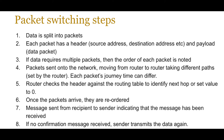The steps to send data from one device to another using packet switching are: first, data is split into packets, each with a header including source address, destination address, and a payload. If data requires multiple packets, the order of each packet is noted. Packets are sent onto the network moving from router to router taking different paths. The router checks the header against the routing table to identify the next hop, or sets the value to zero if maximum hops are reached. Once packets arrive they are reordered, and a confirmation message is sent from recipient to sender; if no confirmation is received, the sender retransmits the data using error checking such as checksums or ARQs.